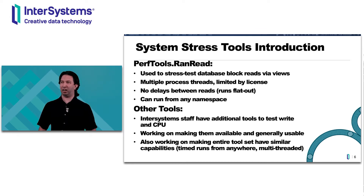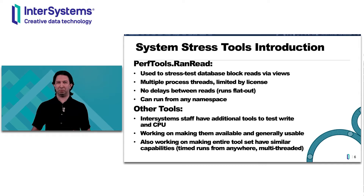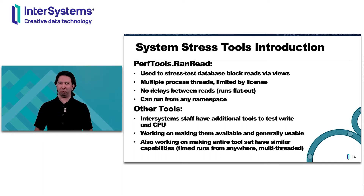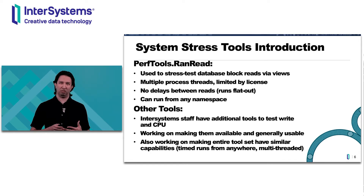The system stress tool we'll be talking about today is perftools.ranread. It's used to stress test database block reads via the view command — it doesn't pull up a specific variable, it just pulls up a random block out of a database. You can have multiple process threads, which are limited by license. There are no delays between reads, so it continually runs as soon as the CPU is available, and it can run from any namespace.